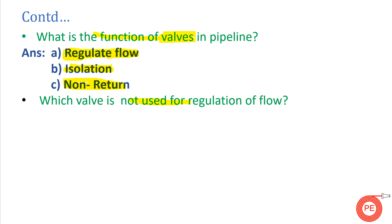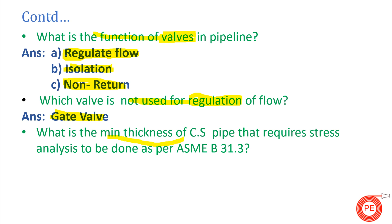The next question is: which valve is not used for regulation or throttling? The gate valve is not used for regulation. If someone asks which valve is used for regulation, the answer is either a butterfly valve or a globe valve — also known as a control valve. Both butterfly and globe/control valves serve the purpose of throttling or regulation.